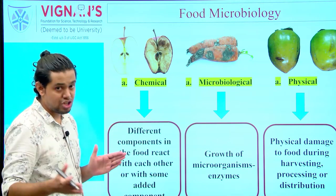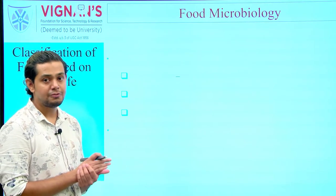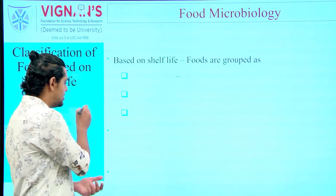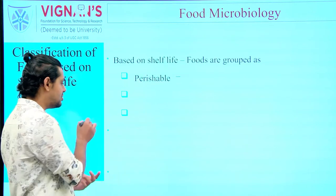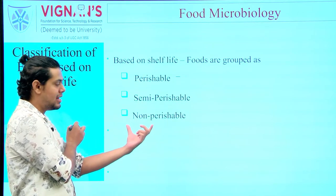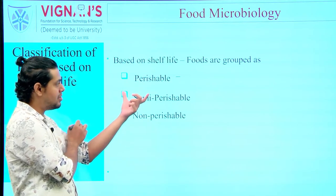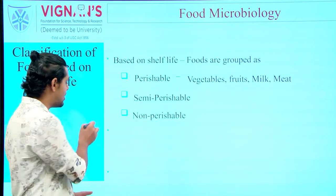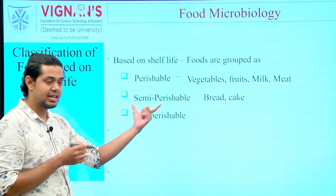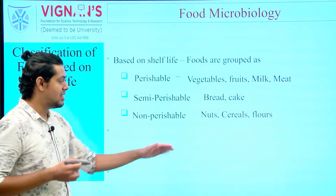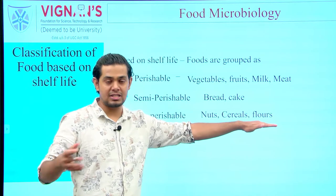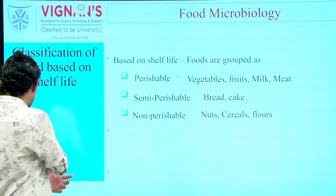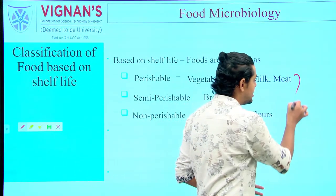Taking spoilage as background, let us classify food products based on shelf life — that is, the keeping quality of a food product. Food products can be classified into three distinct types: perishable, semi-perishable, and non-perishable. Examples include fruits, vegetables, milk, and meat as perishable; bread and cake as semi-perishable; while nuts, cereals, and various flours like rice flour, ragi flour, and wheat flour are non-perishable.